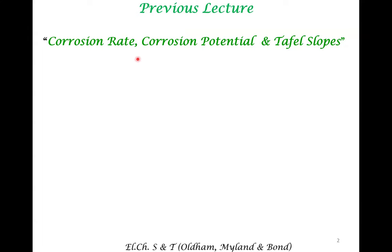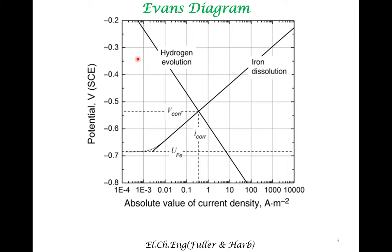We are just going to be representing data and presenting the data in a different manner, because the data representation depends upon the community. In corrosion engineering, for example, the Evans diagram representation is more common. In the Evans diagram, what we are plotting is the potential on the Y-axis and current is plotted on the X-axis — note the log scale.